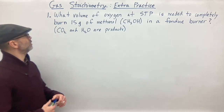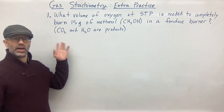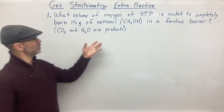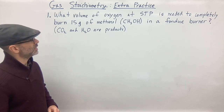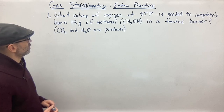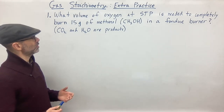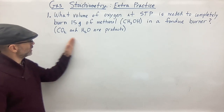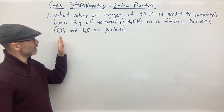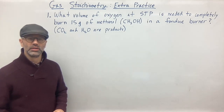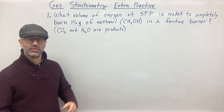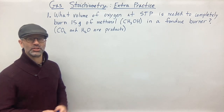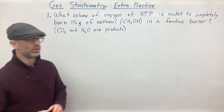Here's the first problem. What volume of oxygen at STP is needed to completely burn 15 grams of methanol in a fondue burner? They tell you that the products are carbon dioxide and water. Go ahead and pause the video, work on this problem, and then start the video when you're ready.